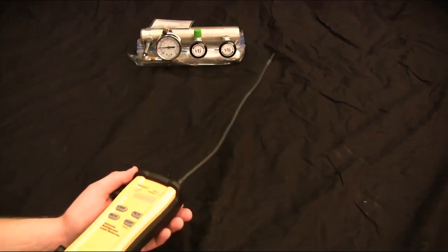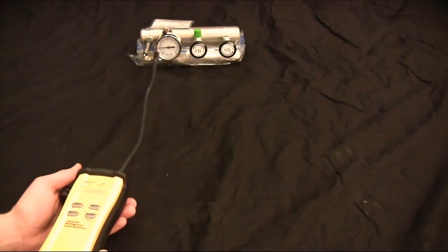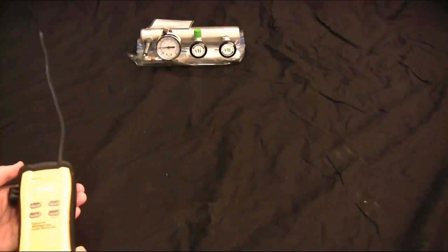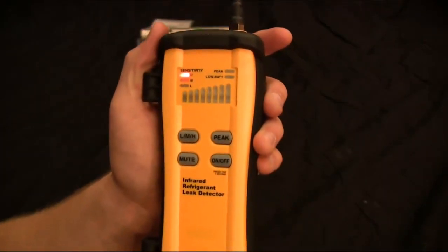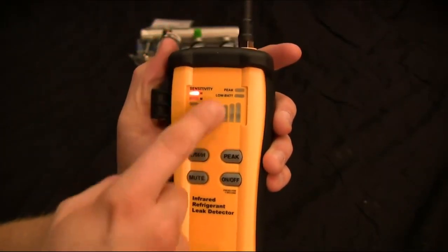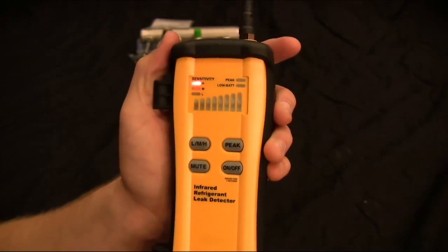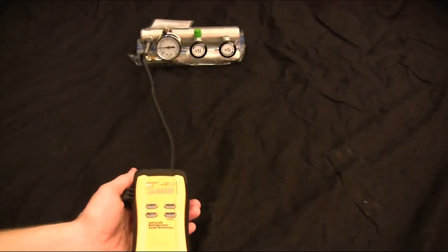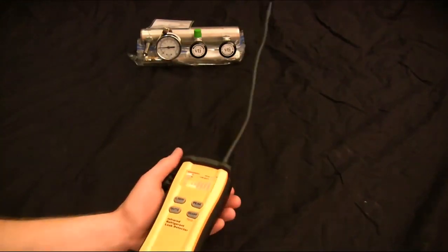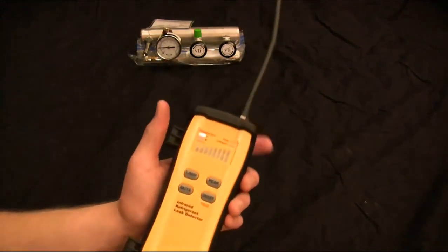Alright, let's just sweep over this. Now see, even at .05, the high sensitivity is still going to sense it. But you can see that it doesn't go all the way up on the bar graph. I think it just made it out of the yellow on the bar graph. So it went up about five or six spaces. So it's not as big as the leak that we were sensing before.